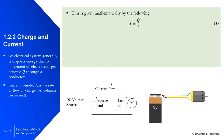Now we move on to some properties of an electric circuit, starting with charge and current. An electrical system generally transports energy due to the movement of electric charge, denoted Q, through a conductor. Current, denoted I, is the rate of flow of charge — in coulombs per second — given by the equation I = Q/T, where T is time.